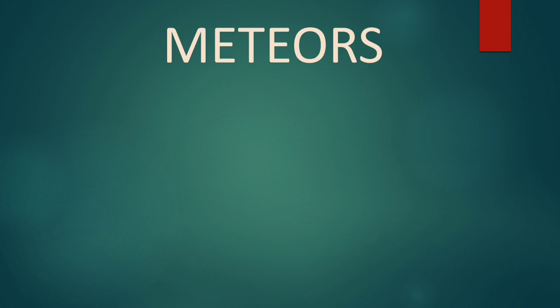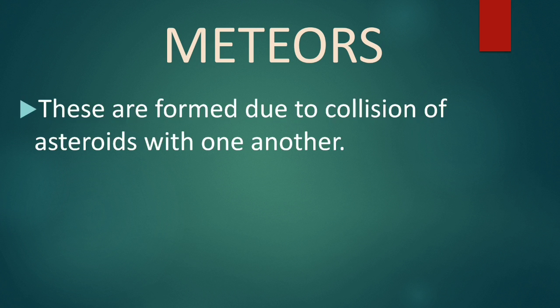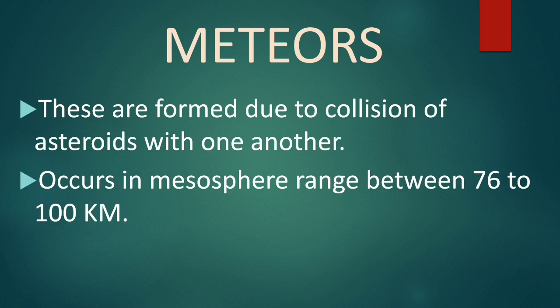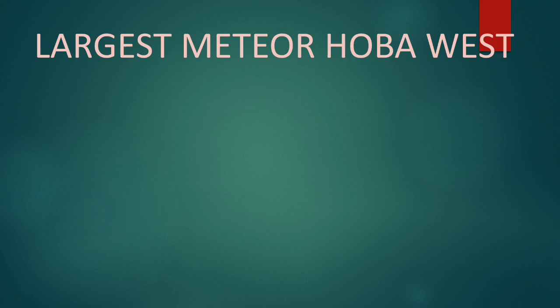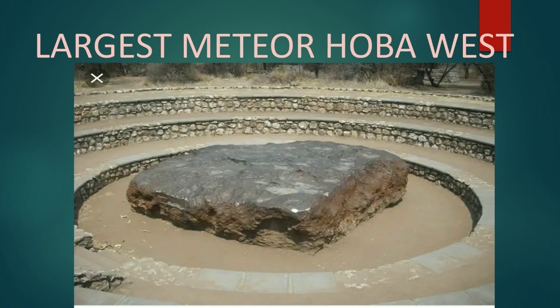Next we will discuss about meteors. Meteors are also known as shooting stars. These are formed due to collision of asteroids with one another. These occur in the mesosphere, which ranges between 76 to 100 kilometers. The largest meteor, Hoba West, which struck the earth in prehistoric times, weighs near about more than 60 tons and it landed in Namibia.